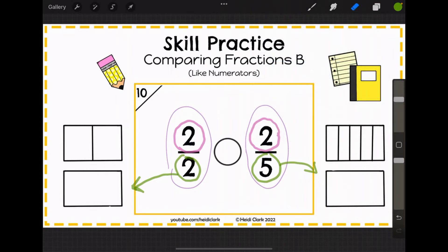The one on the left has bigger pieces, because if you're only sharing with two people, you're going to get a pretty big piece.